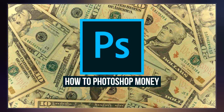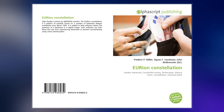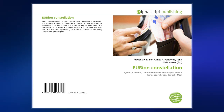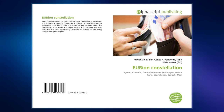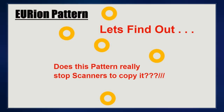The name Eurion Constellation was coined by security researcher Marcus Kuhn, who uncovered the pattern on the 10 euro banknote in early 2002 while experimenting with a Xerox color photocopier that refused to reproduce banknotes. The pattern has never been mentioned officially.